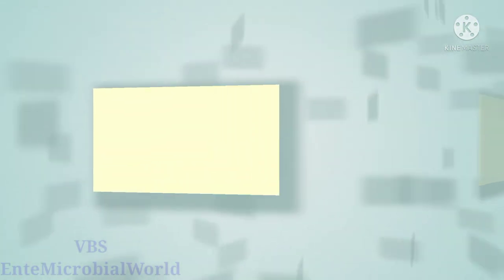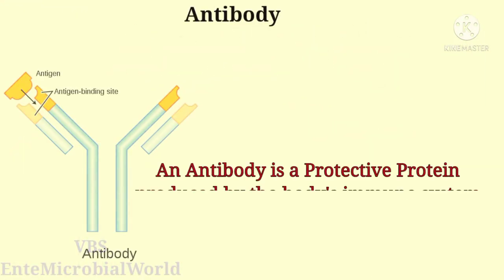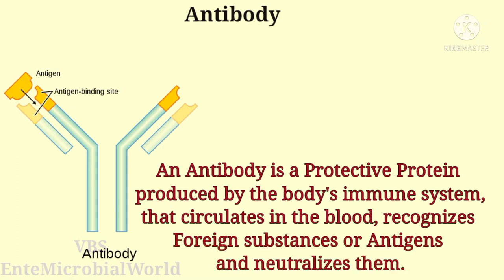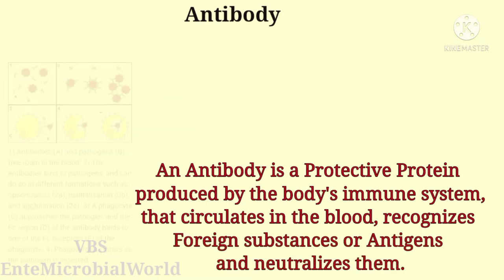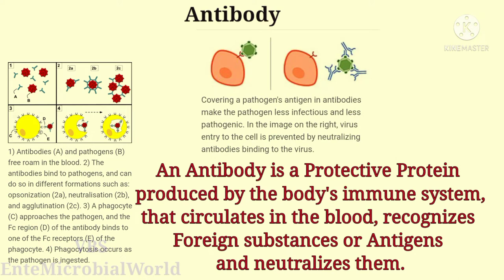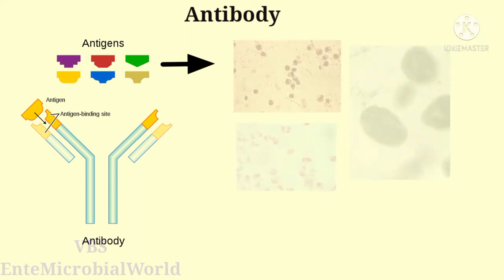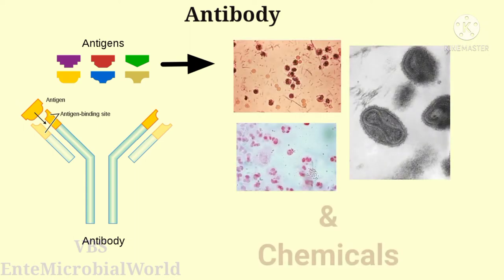At first, we are going to see about antibody. An antibody is a protective protein produced by the body's immune system that circulates in the blood, recognizes foreign substances or antigens, and neutralizes them. Examples of antigens include microorganisms and chemicals.